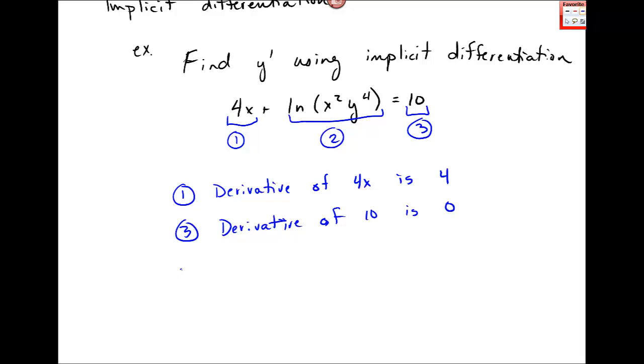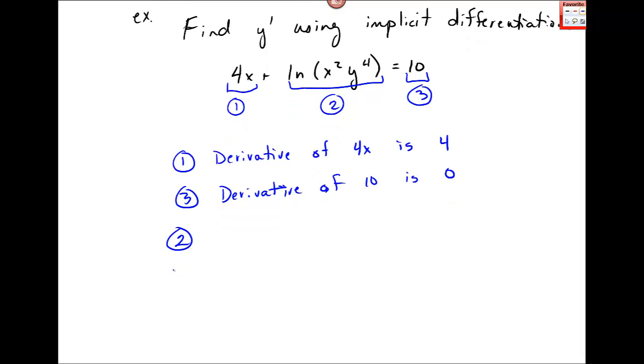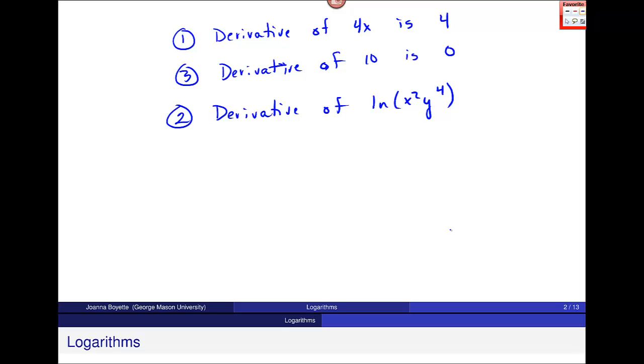Now we want to do piece 2, which is more complicated: the derivative of natural log x²y⁴. This is an example of where I have natural log of some function g(x). When I have this and I want to differentiate f(x) equals natural log of g(x), the derivative f'(x) is 1 over g(x) times g'(x), which we can also write as g'(x) divided by g(x).